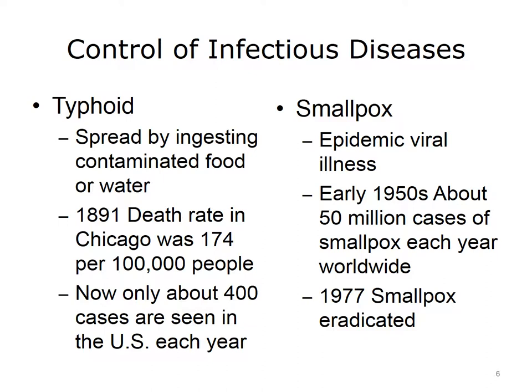Another example of the role of public health in the successful control of infectious disease is smallpox. Smallpox is a devastating epidemic viral illness and was responsible for hundreds of millions of deaths in the 20th century alone. No effective treatment was ever developed, and it killed about 30% of patients who were infected. Between 65 and 80% of those who survived were marked with deep scars, most prominently on the face.